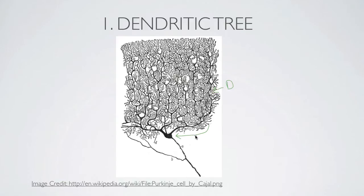If we look at a neuron from above, as in this picture of a Purkinje neuron, we can see the whole dendritic network. This whole thing is called the dendritic tree.